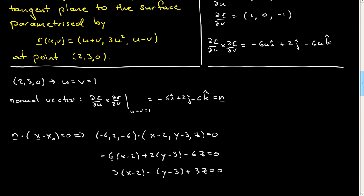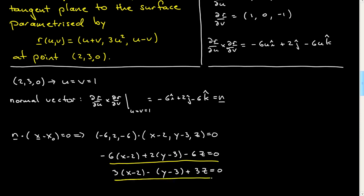At this point you could just say that's your answer — that's fine. In general, if you're going to do something else with this, you might like to simplify it. In particular, I would like to divide this by minus 2, just to write it in a slightly nicer way. So that's an equation in three variables x, y, z, and it describes the tangent plane to the surface at this point.